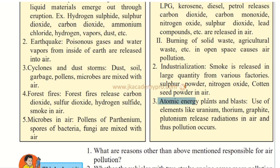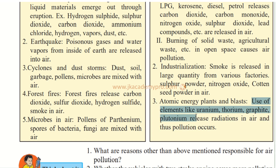Third man-made cause is atomic energy plants. For example, the Bhabha Atomic Research Centre near Trombay in Mumbai. The use of elements like uranium, thorium, graphite, and plutonium releases radiation into the air, causing pollution. All these harmful radiations from atomic plants pollute the air.